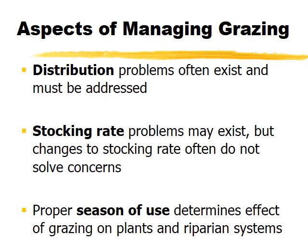The issue with livestock in streams is largely a distribution problem. Stocking rate may not be the primary problem — sometimes animals are attracted to the stream due to distribution issues even if the pasture is properly stocked. It's a combination of animal attraction to the stream and overall pasture stocking rate. Reducing stocking rate alone may not solve the problem if the real issue is distribution. The season of grazing is also a critical management aspect.